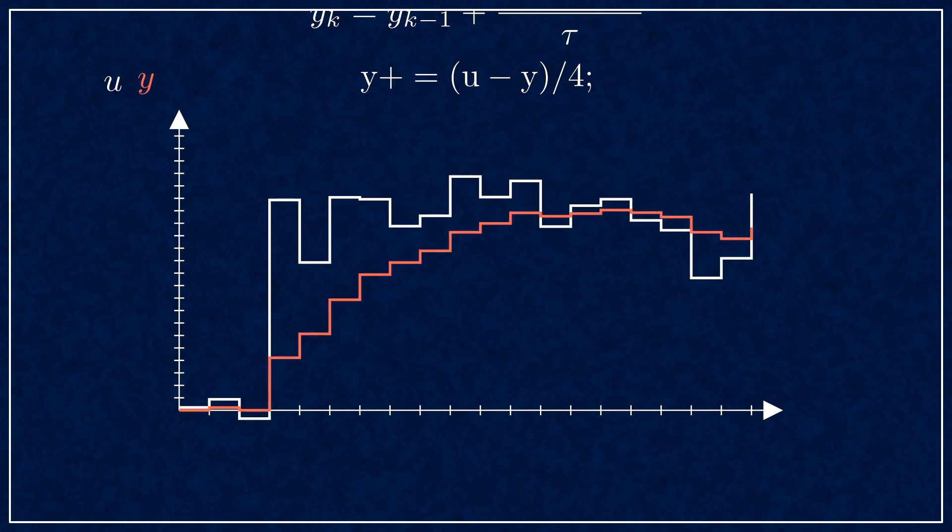For a constant input like this, it converges to the input value in the limit. But if there's noise, it kind of reacts to a quarter of the noise every step, that's how it filters it.